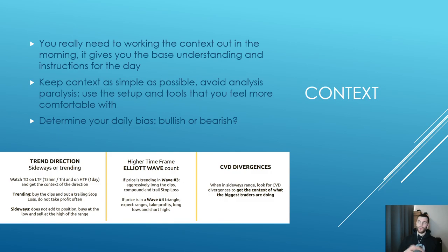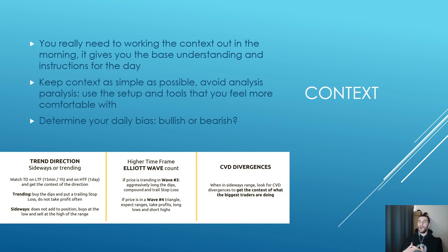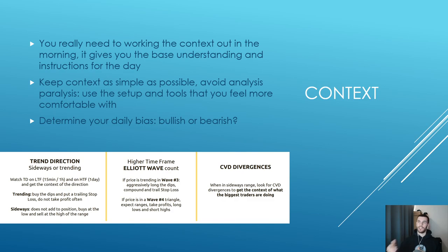When watching the high time frame context, also look at Elliott wave. If price is trending in a wave three aggressively, buy the dips, compound, and trail the stop loss. If price is in a wave four — say a triangle — expect ranges, take profits, long lows, short highs. If price is putting in a fifth wave, I get more aggressive with my short setups, because Elliott wave is something I know how to use and interpret.